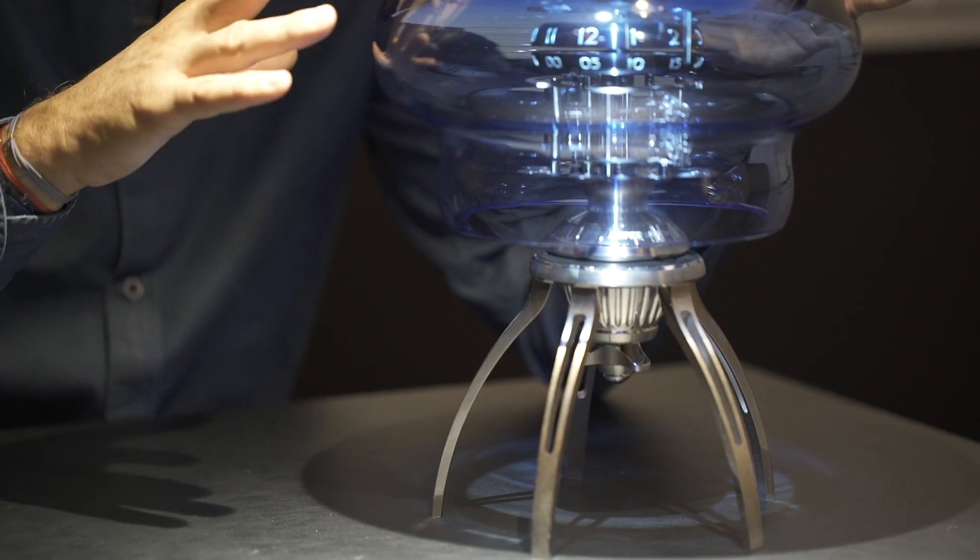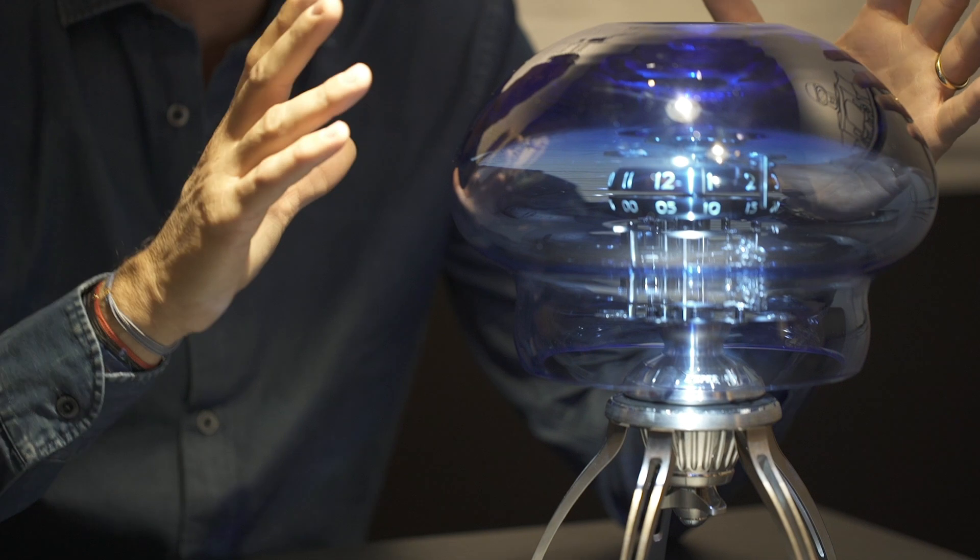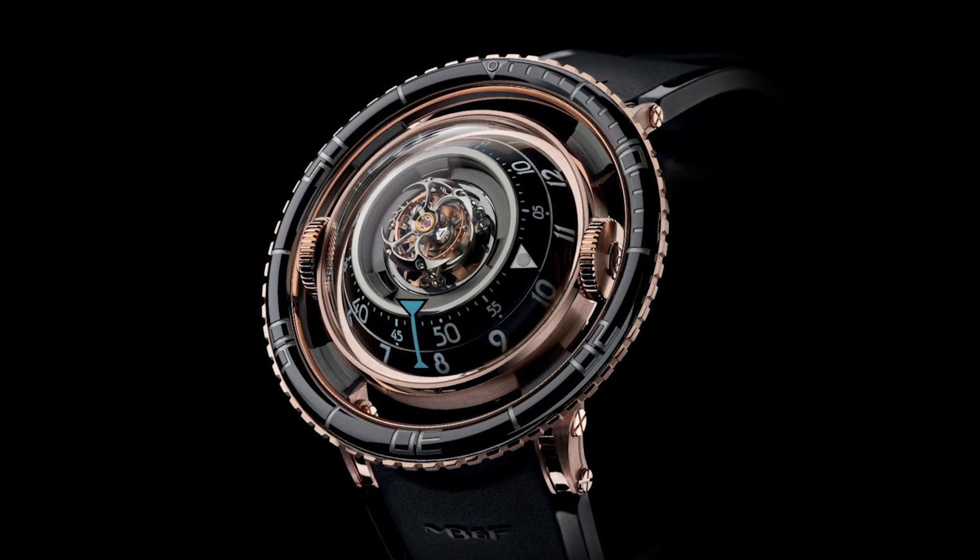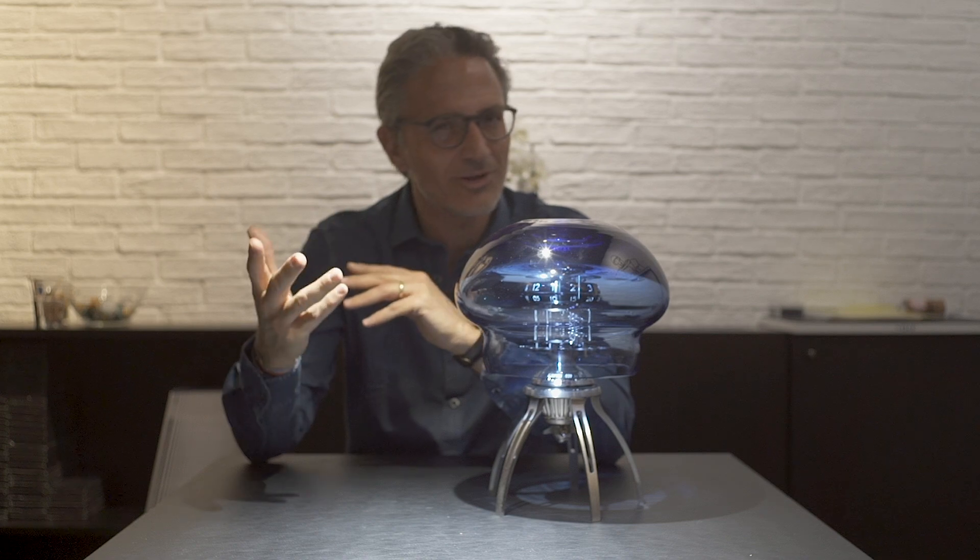This piece is actually the idea of someone else, an independent designer called Fabrice Gonet. Fabrice saw our Aquapod wristwatch a few years ago, which was also designed a bit like a jellyfish. And he thought, this could be cool, this could also become a clock. So he spontaneously proposed the idea to Max.